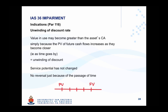Taking this back to IAS 36, what we are looking at is a value in use calculation. Value in use calculations is where you take future cash flows and discount them back to a present value. So if you are in year one, you take the future value and discount it to the present value. If you go into year two, that future value can be discounted again but for one period less, meaning the present value in the second period will be higher than in the first.